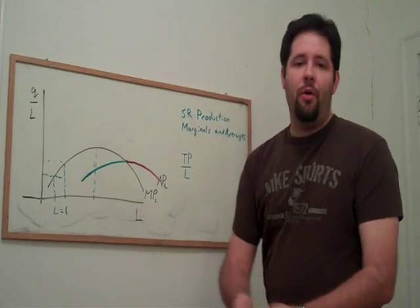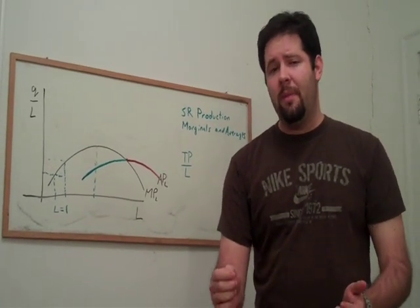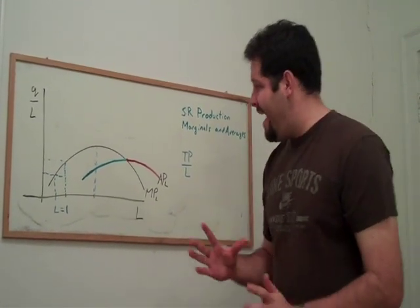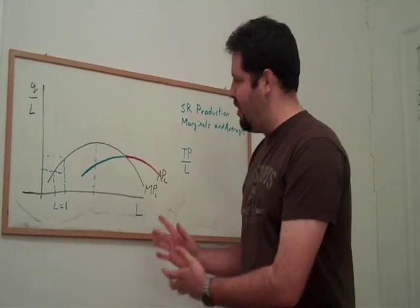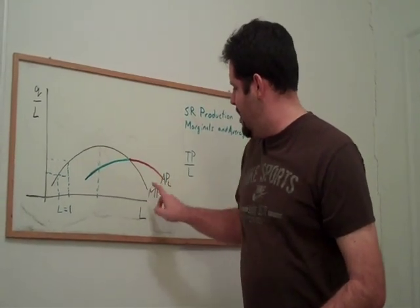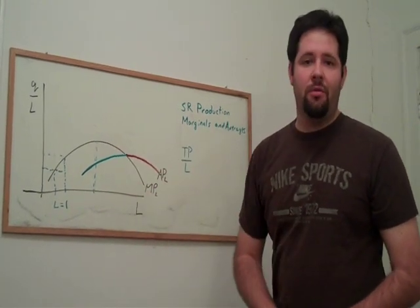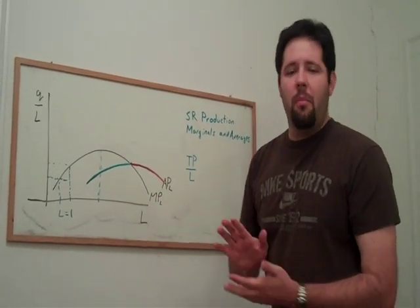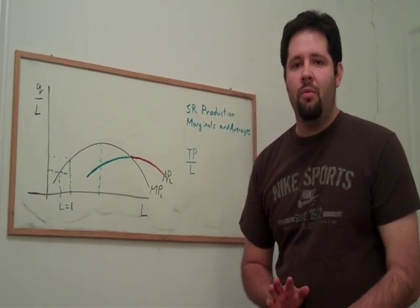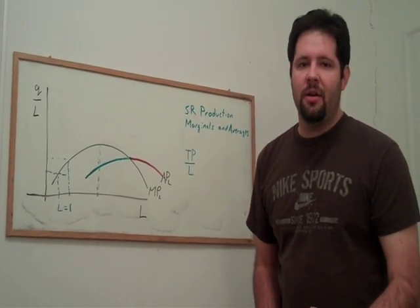So now you have a sense for both how marginals relate to averages, which is a very important economic concept. We'll use it when we talk about cost curves. And you have a sense for the short run production graph. We have marginal product. We have average product. We have our point of diminishing marginal returns. This graph will be a very important input into our cost curve graph, which in turn will give us the foundation for a supply curve.